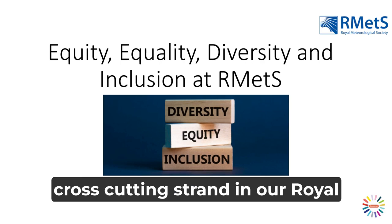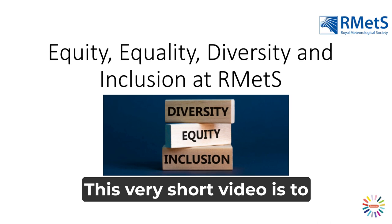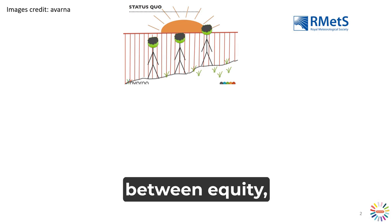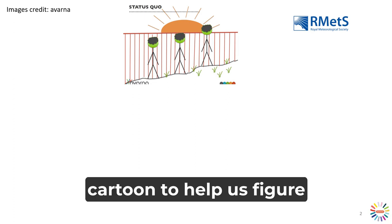Diversity and inclusion is a cross-cutting strand in our Royal Meteorological Society strategy. This very short video is to explain the different terms that we use when we're talking about diversity and inclusion. One of the most important things to understand is the difference between equity, equality and inclusion. We're going to use our cartoon to help us figure that out in this video.